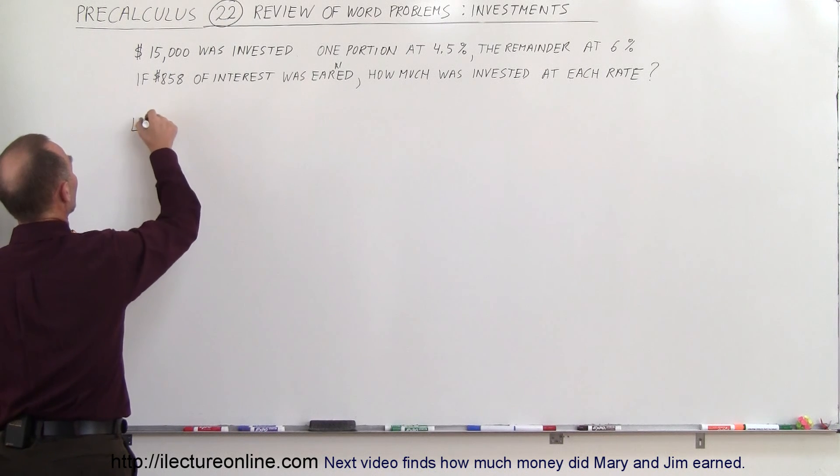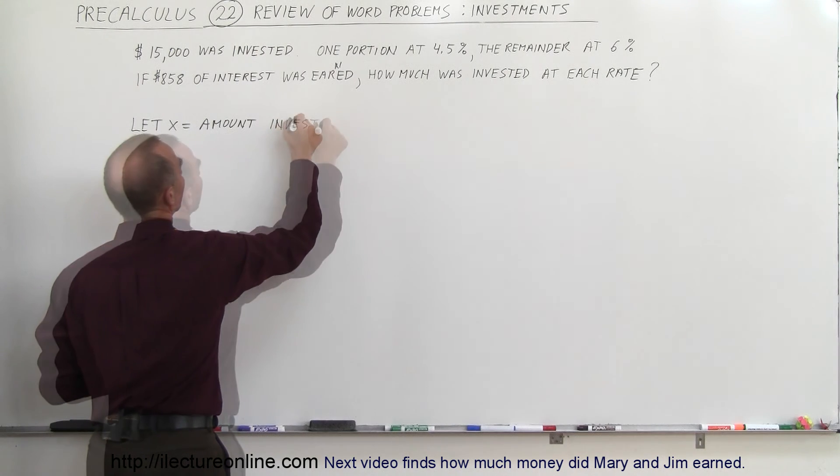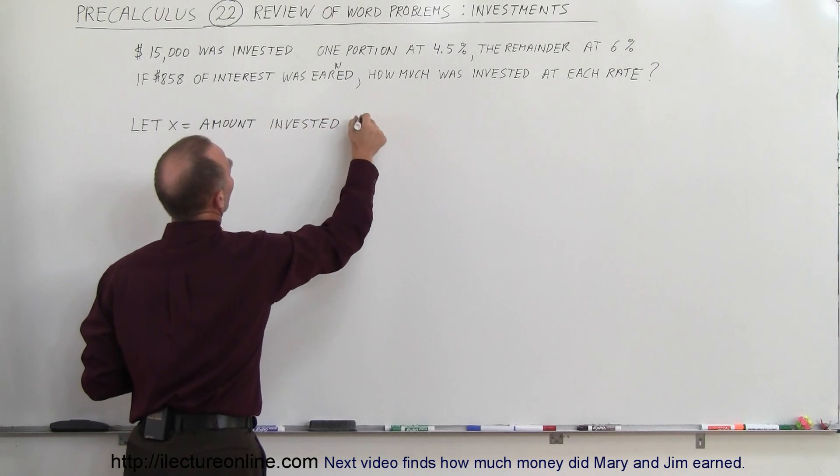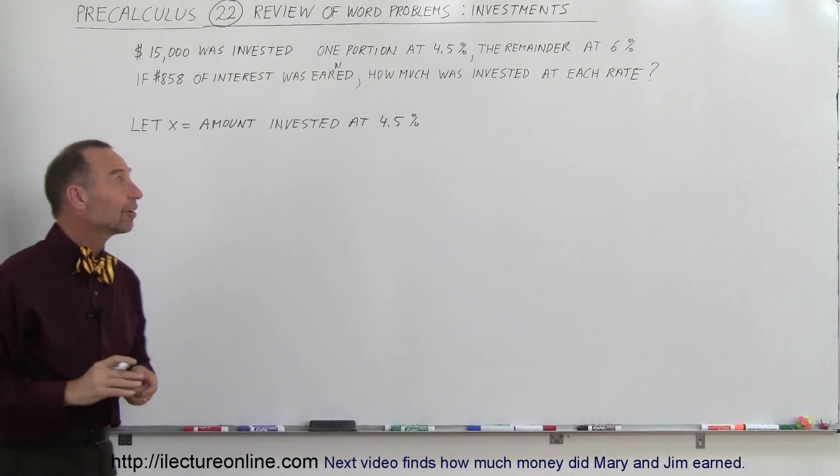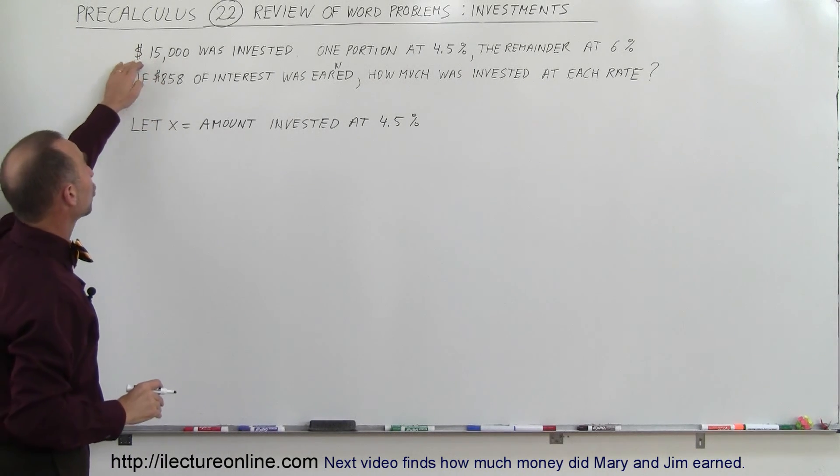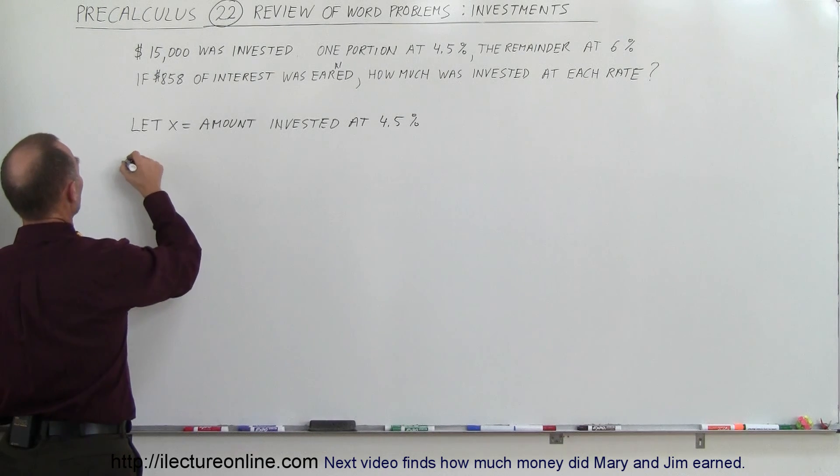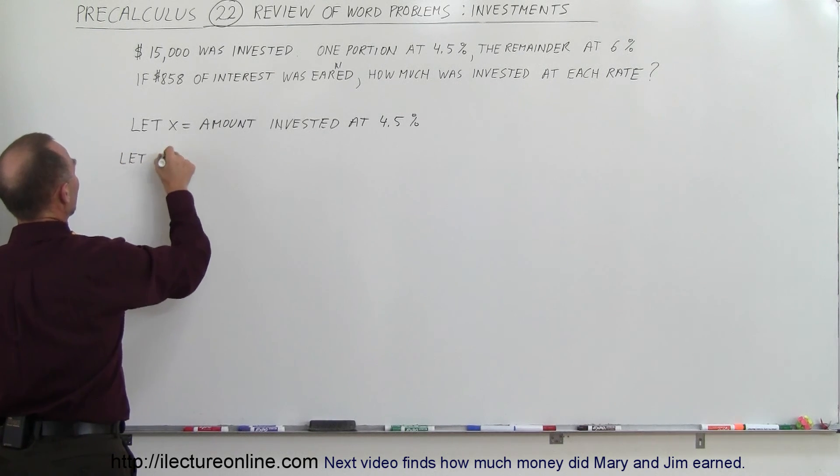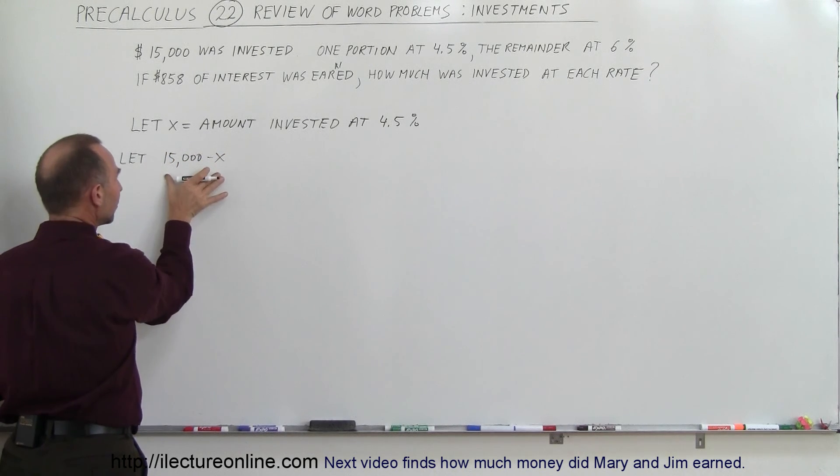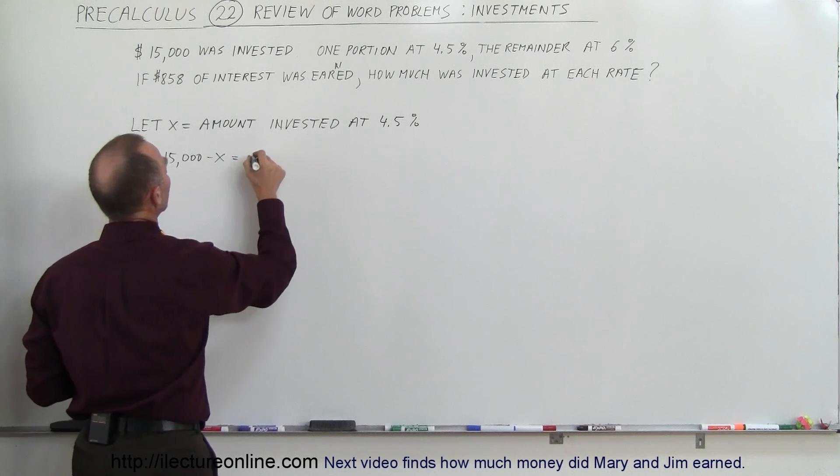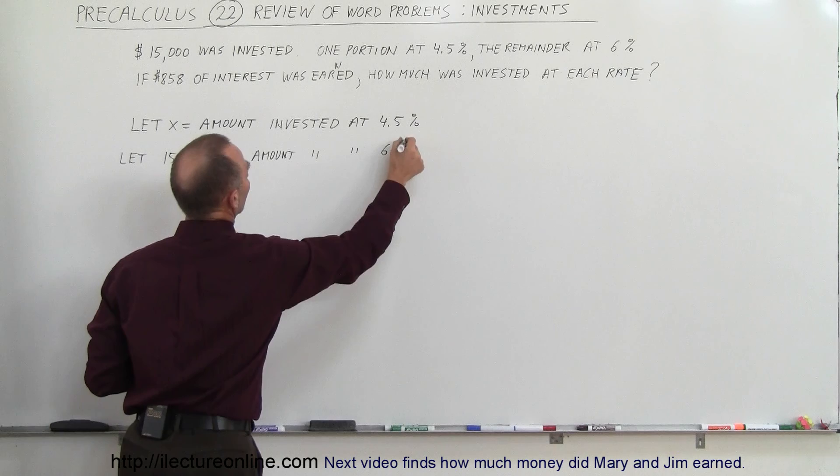So let x equal the amount invested at 4.5%. And since the total amount invested was $15,000, the total minus x will be the amount invested at the next rate. So therefore let $15,000 minus x, that's the remainder, equal the amount invested at 6%.